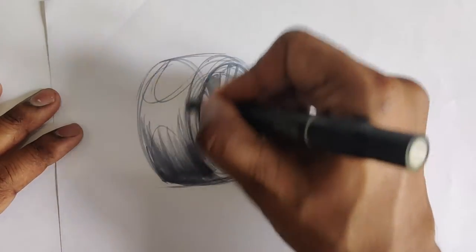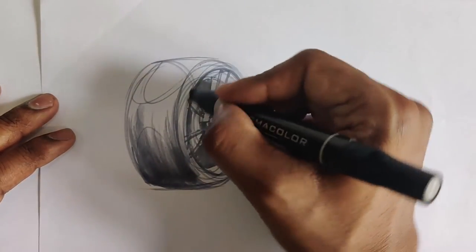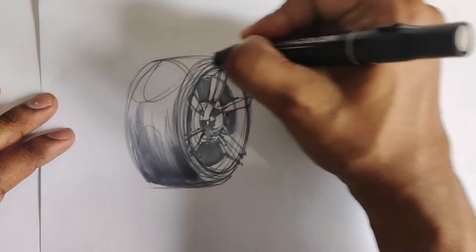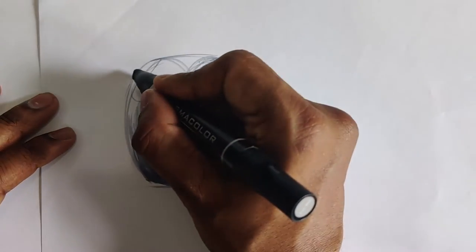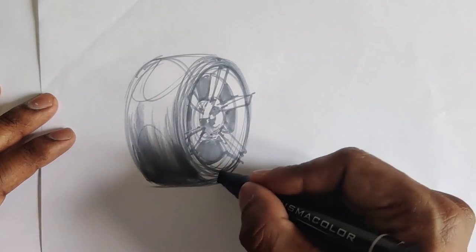So now I'm just going to darken up the bottom of the tire with a little bit more shading. And if I go through a couple of passes of ink, it's just going to make it a little bit darker. If you're wondering what marker I'm using, I'm using a Prismacolor alcohol marker, and I think it's 50%.